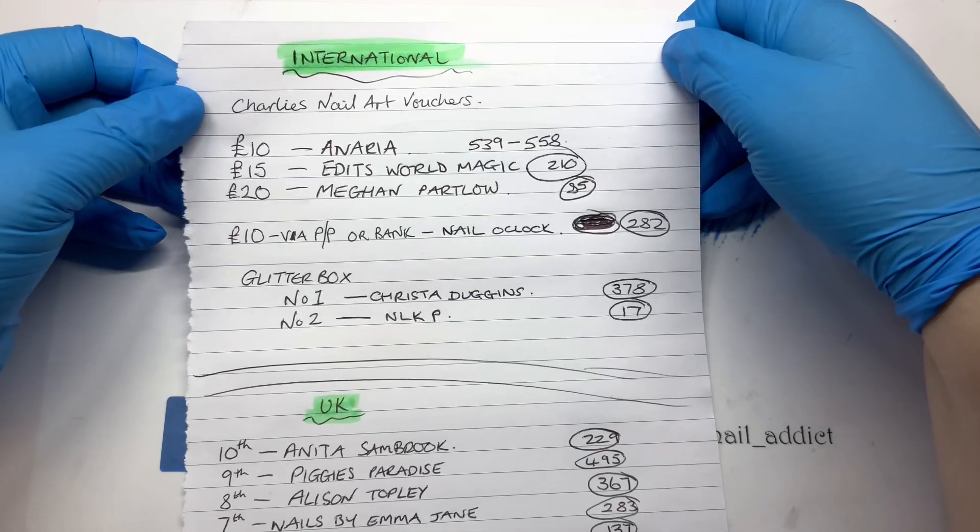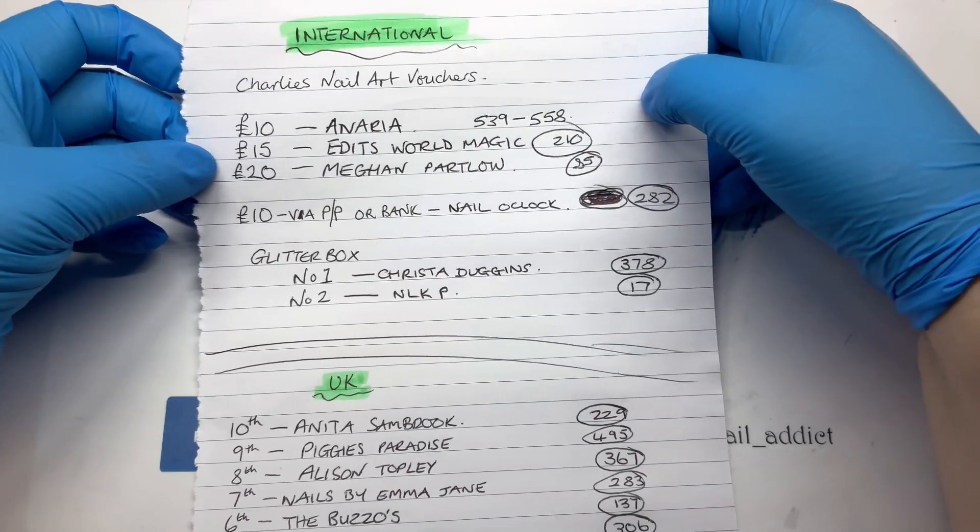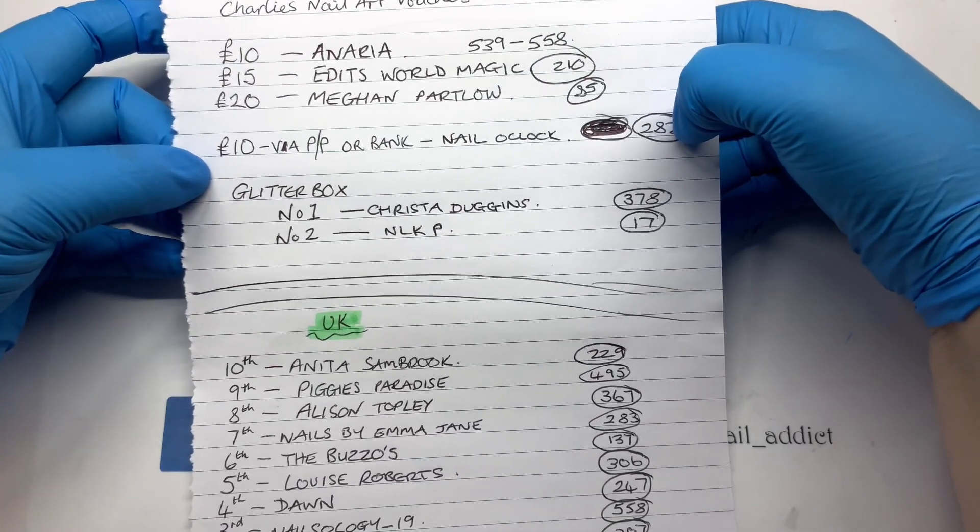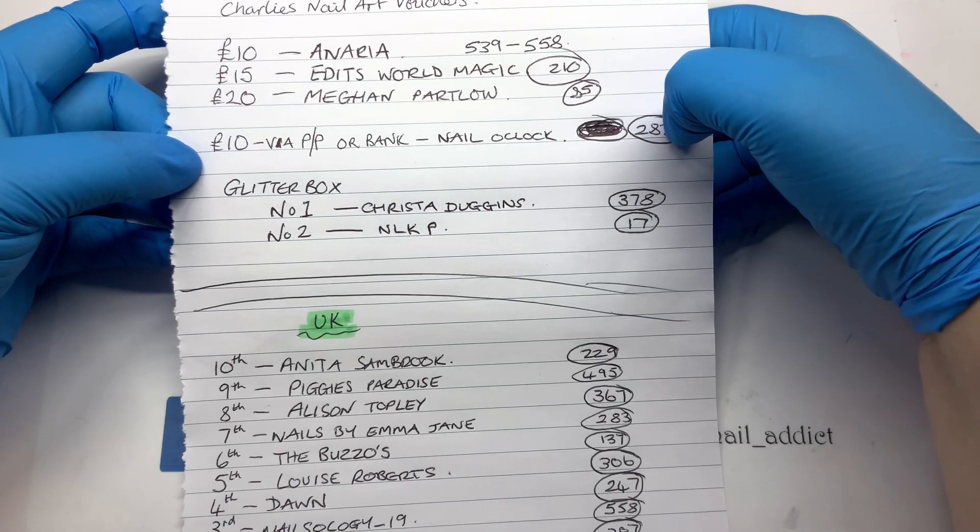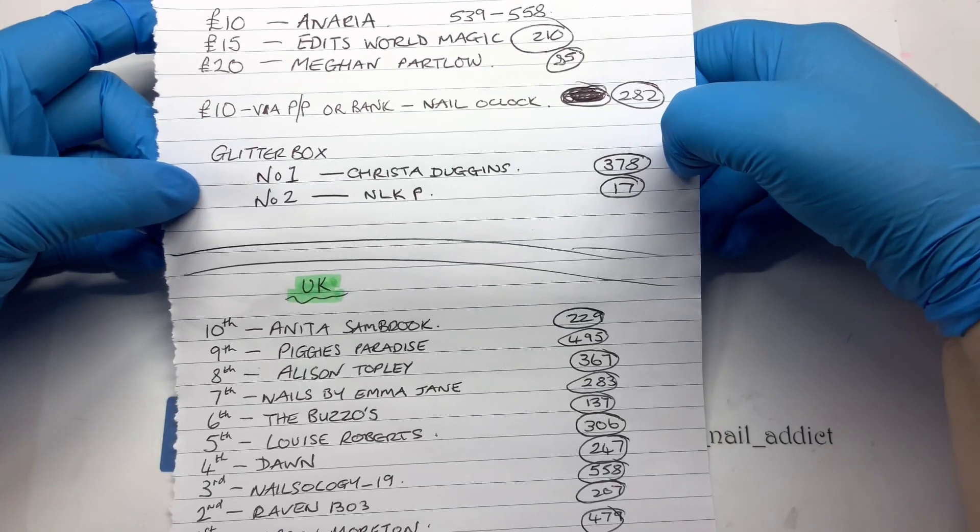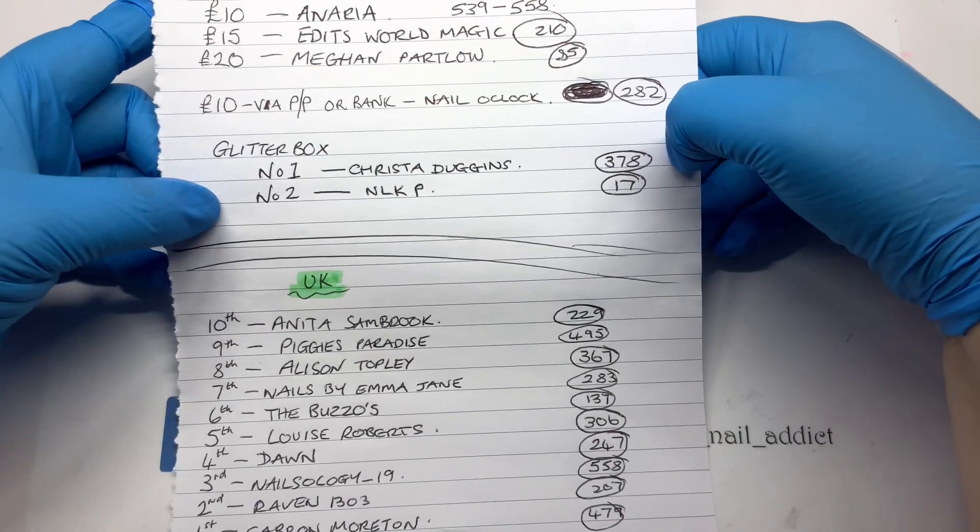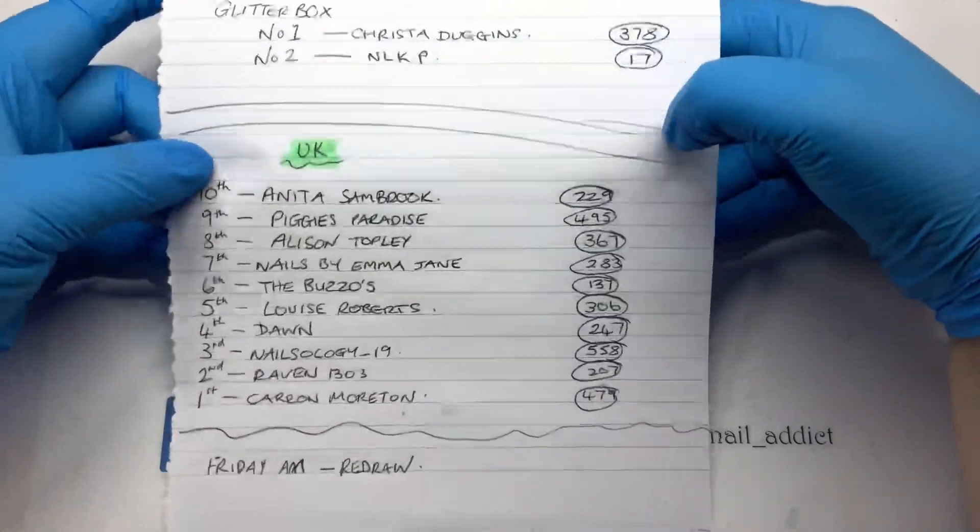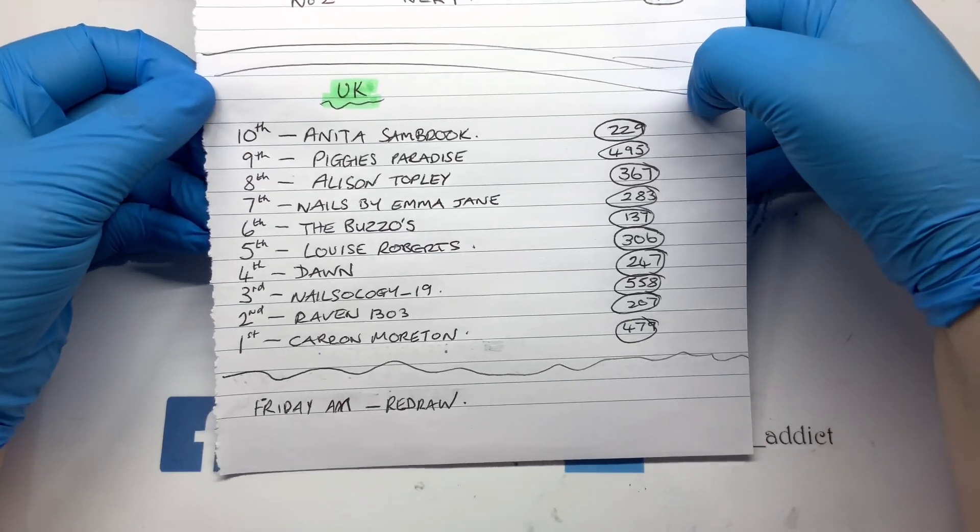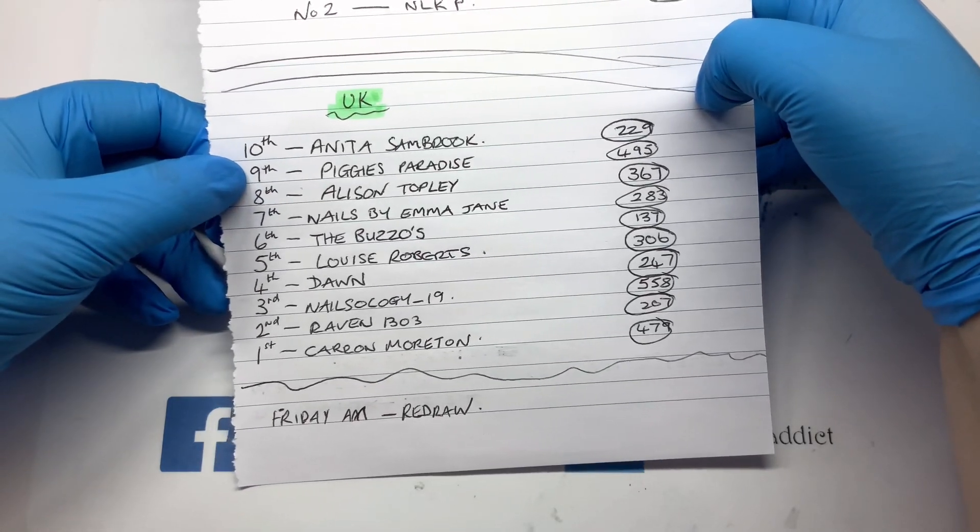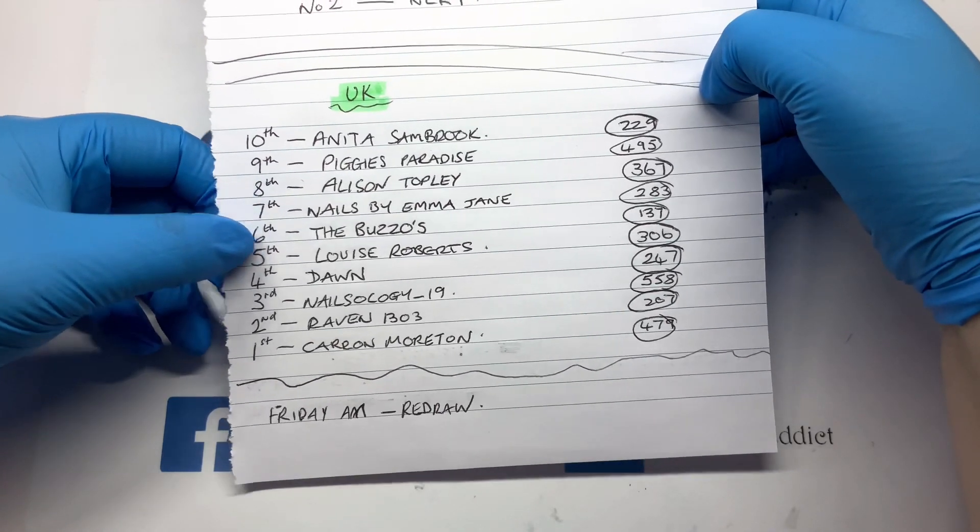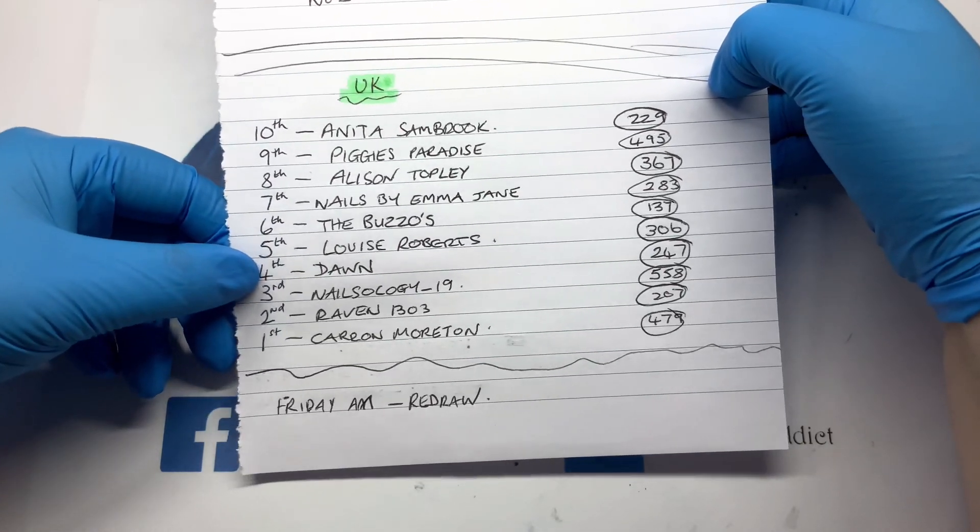We have got international winners: Anaria, Edits World Magic, and Megan Partlow. I've got ten pounds to PayPal or bank transfer to Nail O'Clock, and two glitter boxes going to Krista Duggins and NLKP. And that is the UK people: Anita Sambrook, Piggy's Paradise, Alison Topley, Nails by Emma Jane, the Buzzos, Louise Roberts, Dawn, Nailsology 19, Raven 1303, and Caron Morton.